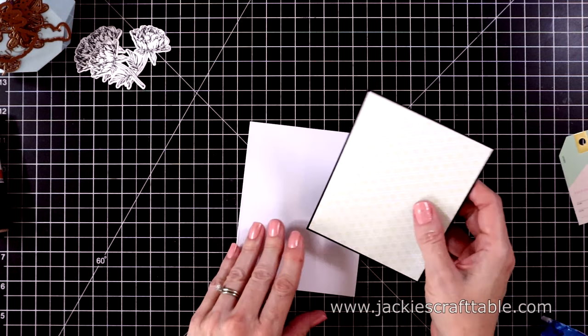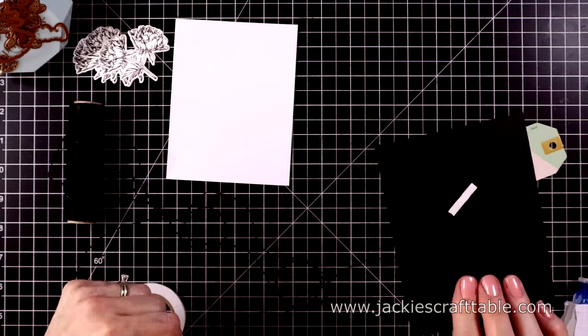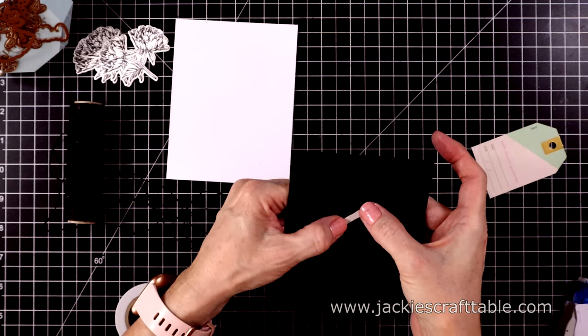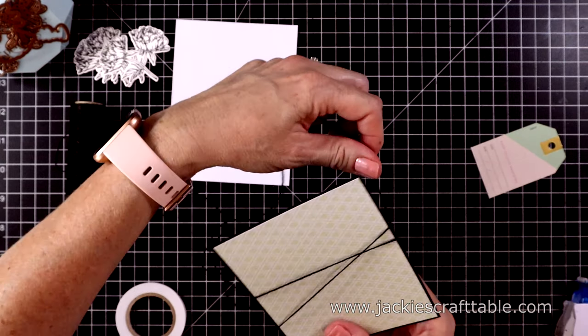I had to put it on top of my card because I can't see the black cardstock on my black work mat. So this is the reason I wanted to use a black piece of cardstock to mat this pattern paper.